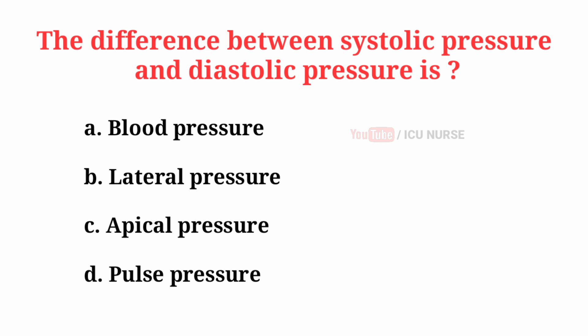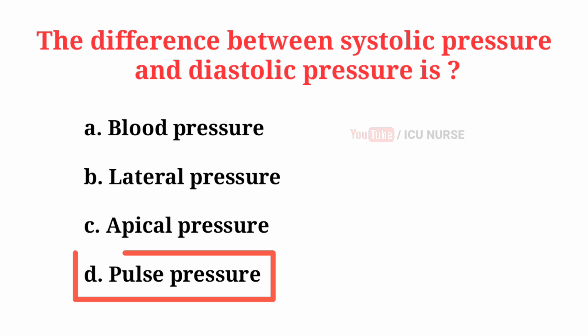The difference between systolic pressure and diastolic pressure is — the correct answer is D: Pulse pressure.